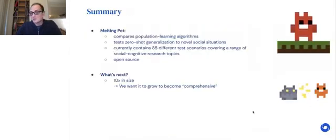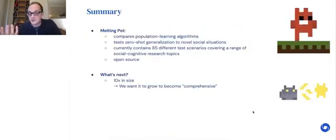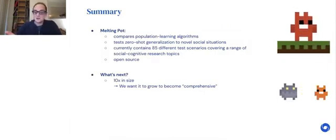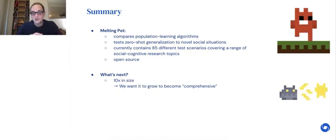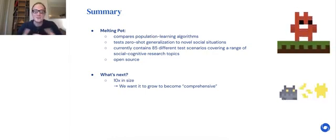To summarize, Melting Pot compares population learning algorithms, multi-agent reinforcement learning algorithms. It tests zero-shot generalization to novel social situations. It currently contains 85 different test scenarios covering a range of different topics, and it's open source. What's next? We want it to grow 10 times in size. We're planning to submit a large number of additional scenarios over the coming months.